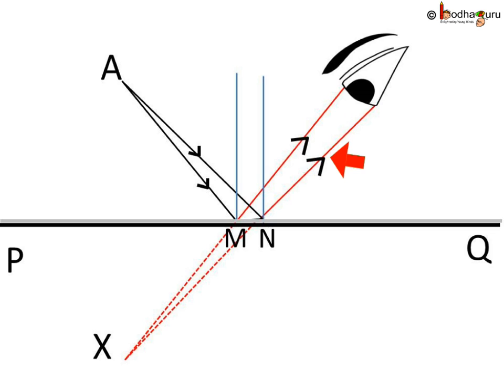Now these reflected rays reach your eye. If we extend the reflected rays backward, you would see that they meet at a point, say X. So it would appear that rays are coming from a virtual point, which is X.